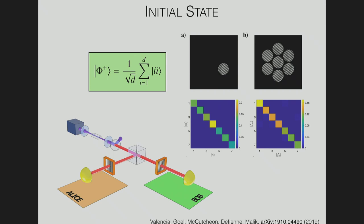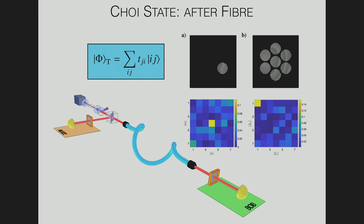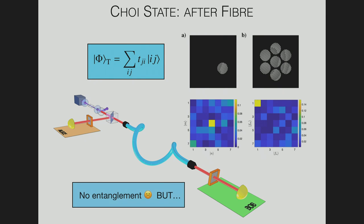Let's start with the initial state. We have a crystal pumped with a carefully shaped pump laser and we measure correlations between Alice and Bob. In this macro-pixel basis and the mutually unbiased basis, we measure very nice correlations, allowing us to certify a fidelity of 94% in a seven-dimensional mode space — we are entangled in seven dimensions. When we put one of the photons through multimode fiber, the data looks terrible — you have no correlations. But this scrambled data actually encodes information about the fiber in two different bases.